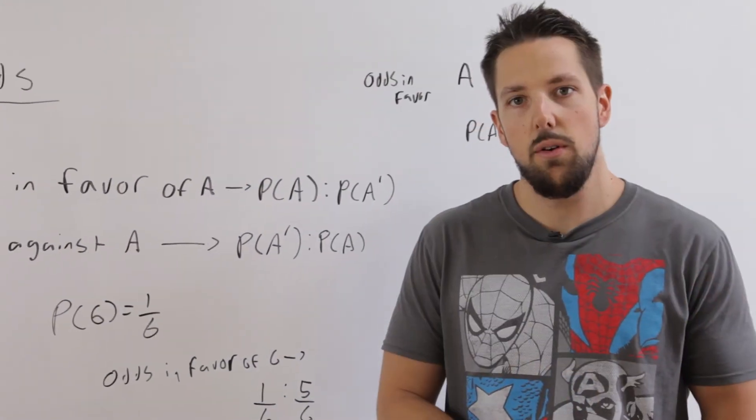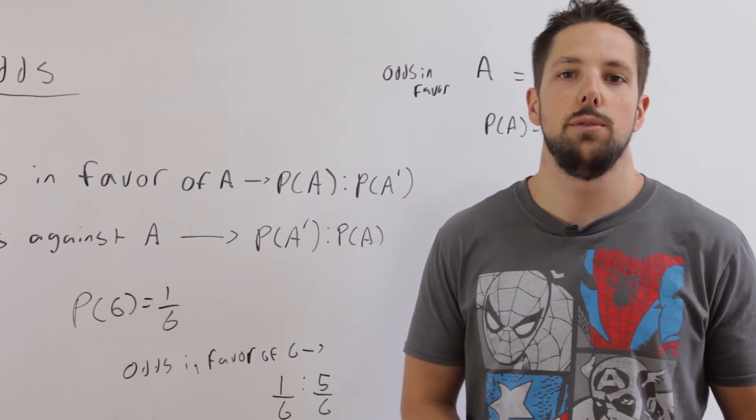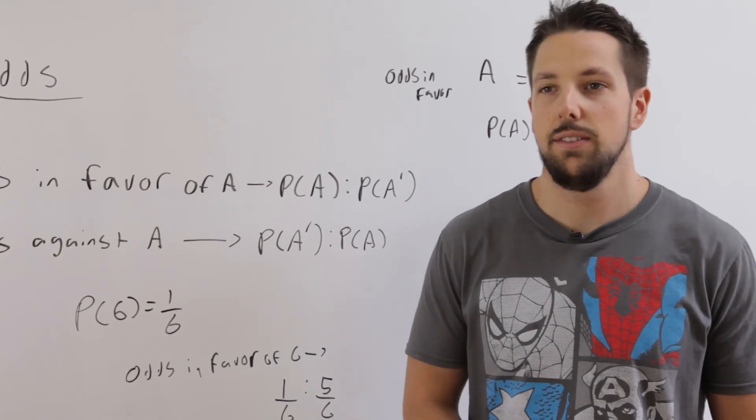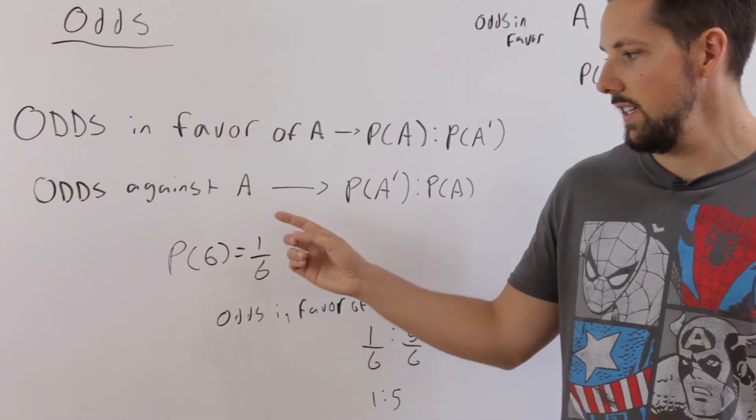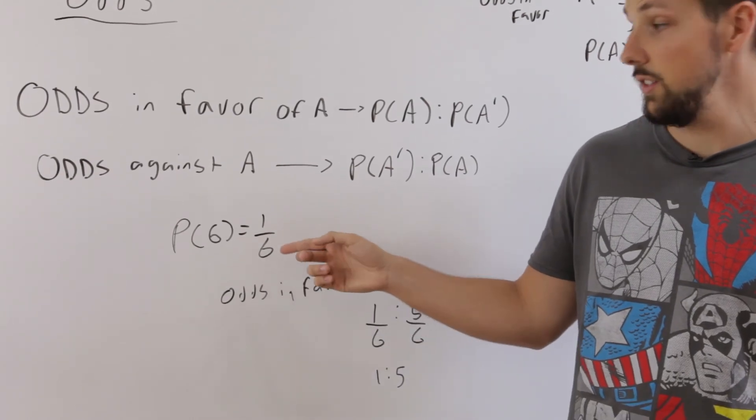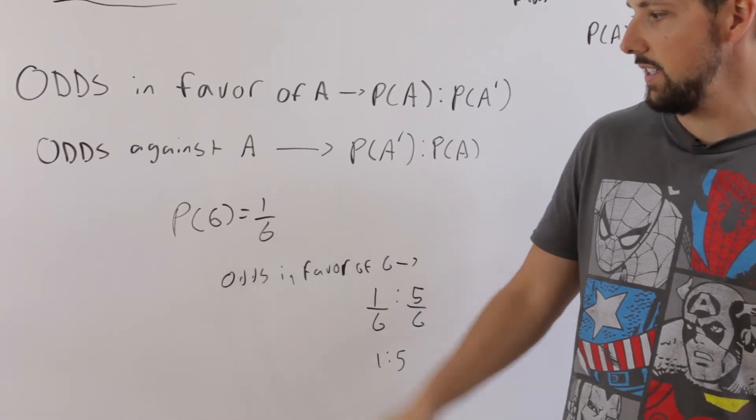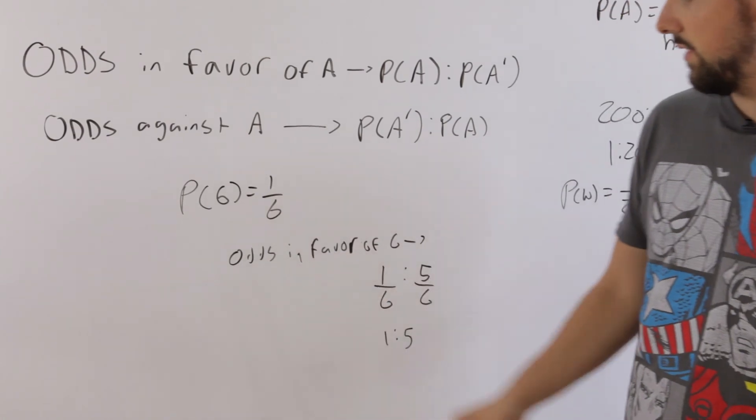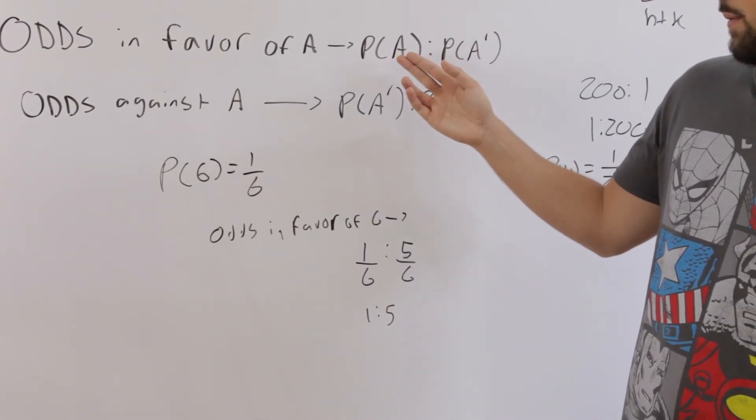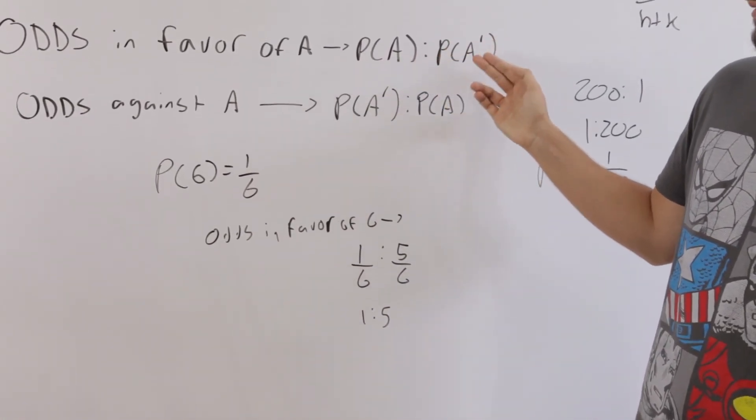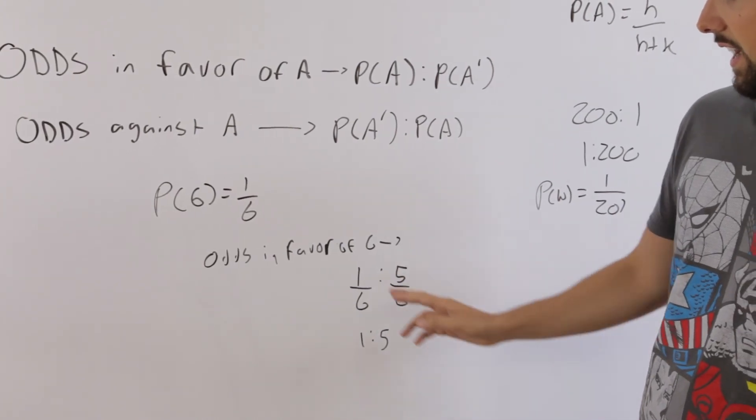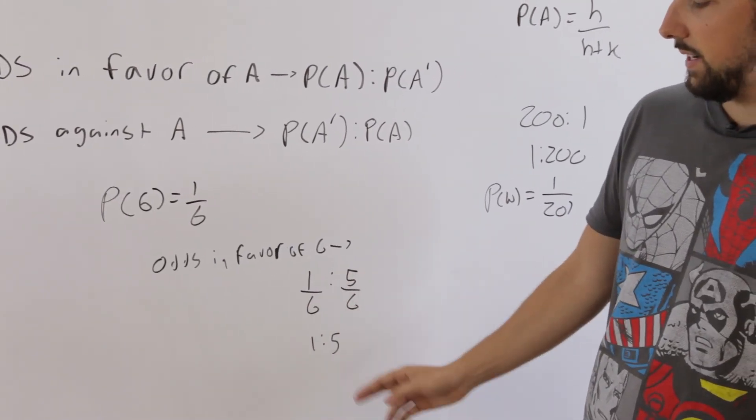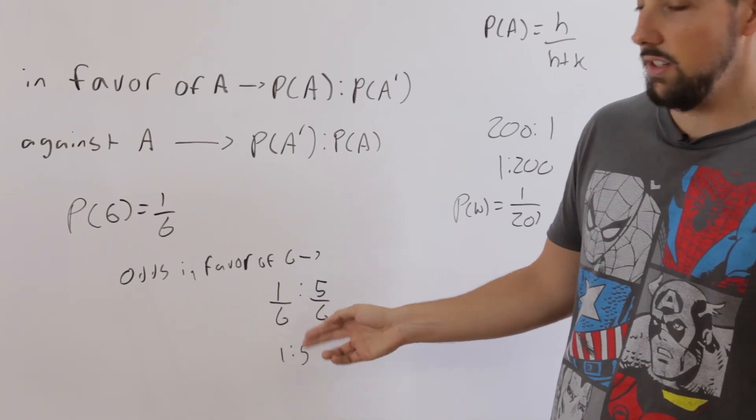Let's say we want to find the odds in favor of rolling a 6 using a single die. We use this formula: the probability of getting a 6 is 1 over 6—there's only one desired outcome of 6 and 6 total outcomes. So the odds in favor is just the probability of a 6 as a ratio to the probability of not a 6. So you have 1 over 6 to 5 over 6, and if we multiply it out to get rid of the denominators, the odds in favor of a 6 are 1 to 5.